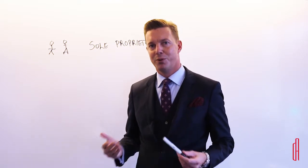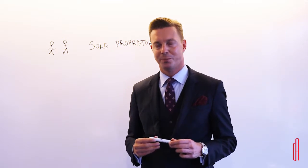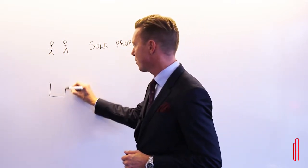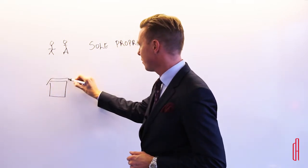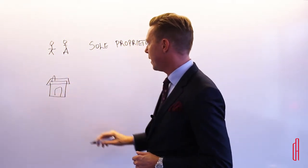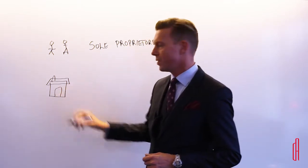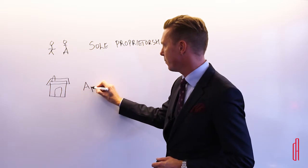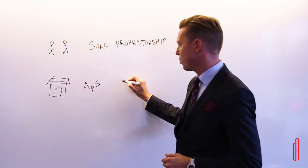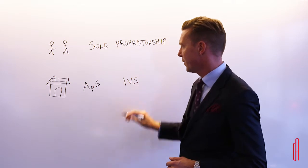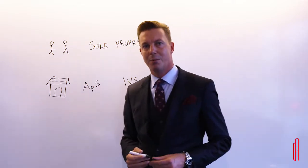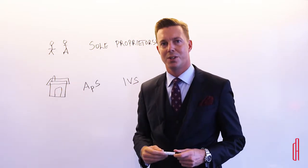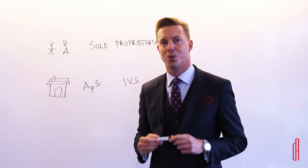Other people prefer to isolate the liability in a company structure. The company structures we see most are the APS and the IVS. They are both limited liability companies, and what makes them different from each other is the capital requirement when you establish the company.